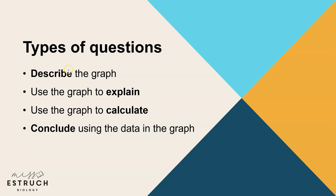First of all, an overview of what we actually mean by these command words. Describe — you are saying what you see, but when it's linked to a graph you have to include data, such as between which set points there is an increase, a decrease, a plateau, or a difference between means. Explaining — you are saying why that pattern exists, applying your biology knowledge. Calculate — that's maths. And conclude — you are saying what the experiment and the graph actually tells you.